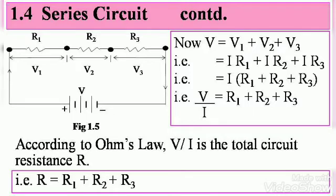If you take I to the left-hand side, you get V over I equals R1 plus R2 plus R3.